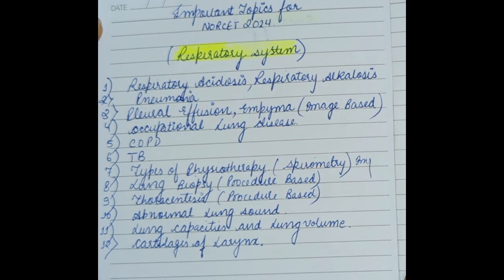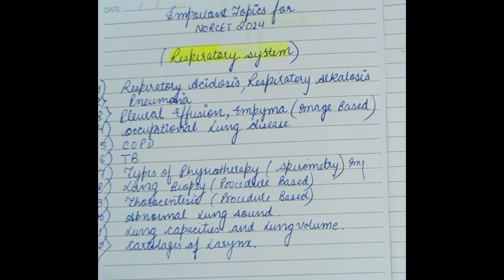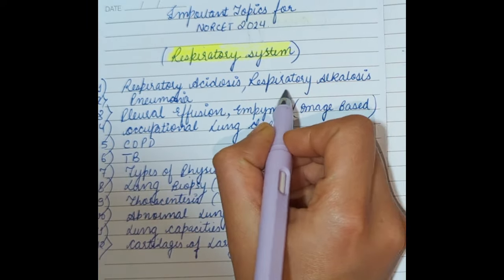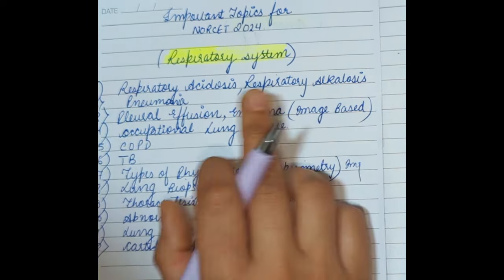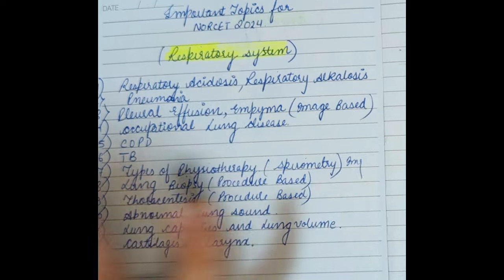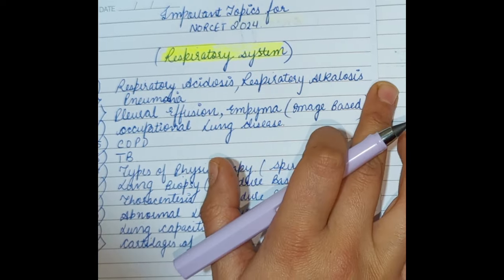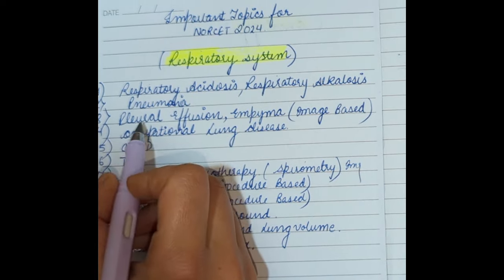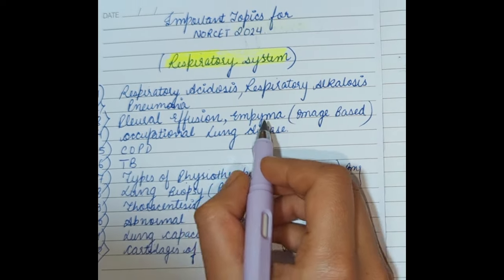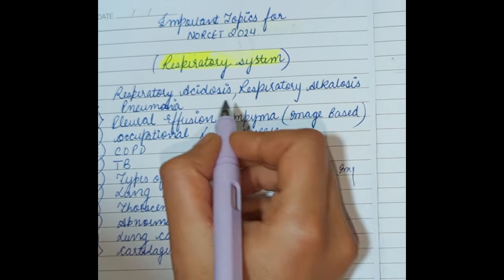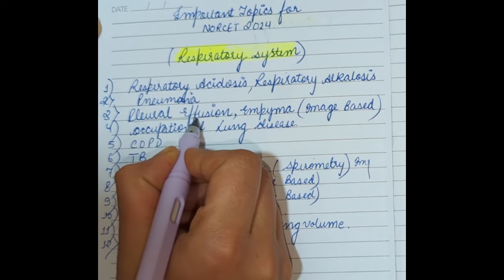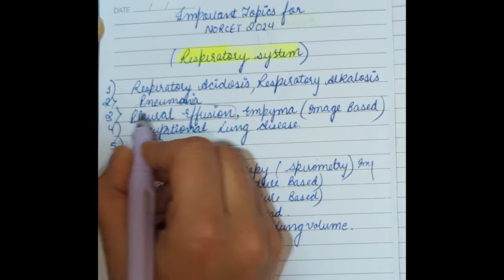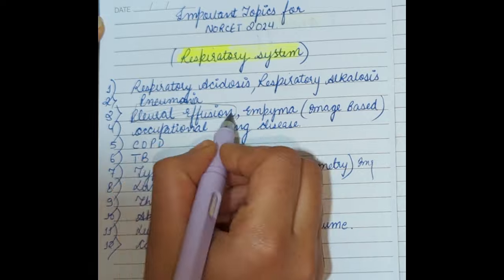If you study these topics thoroughly, you will be well prepared when exam time comes. The first topic is respiratory acidosis and respiratory alkalosis — these topics come up every time, so study them very well. Second is pneumonia. Third is pleural effusion and empyema — last time an image-based question was given with an X-ray of pleural effusion, so expect image-based questions from this.